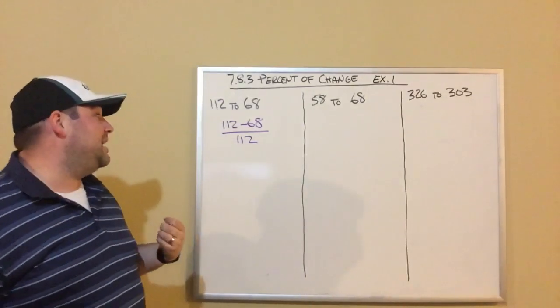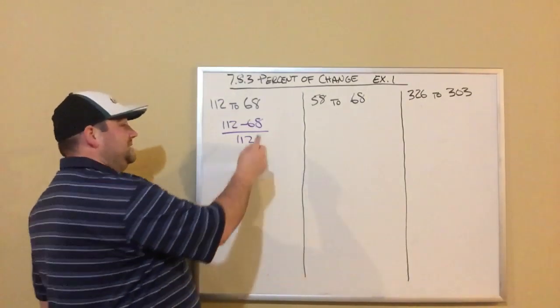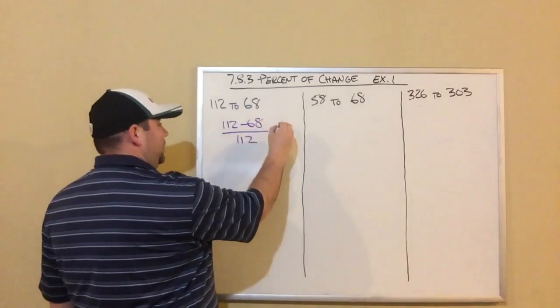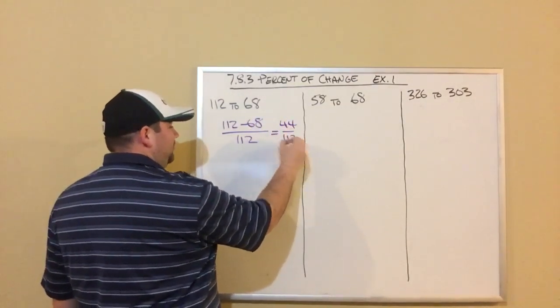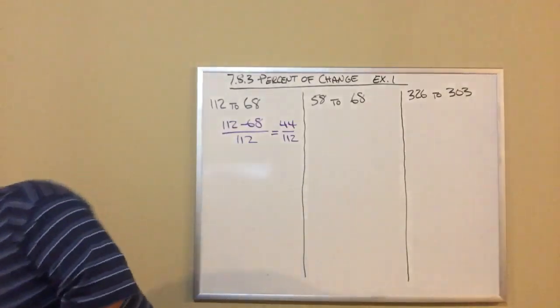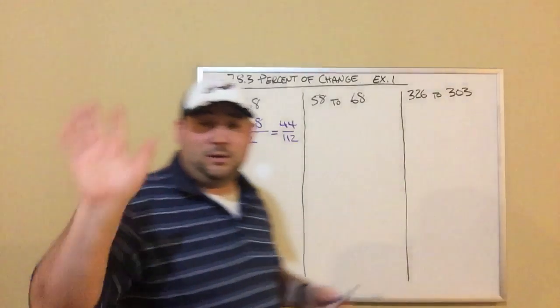So then I'm just going to do the math here. 112 minus 68 is, if I do some math here, 44, and that's still over 112. Then I'm just going to do that division in my calculator, which I have a calculator somewhere. I'll be right back.